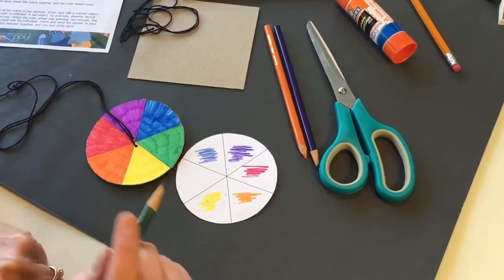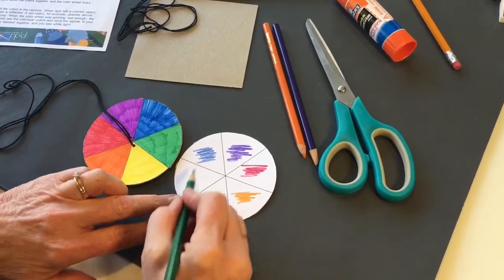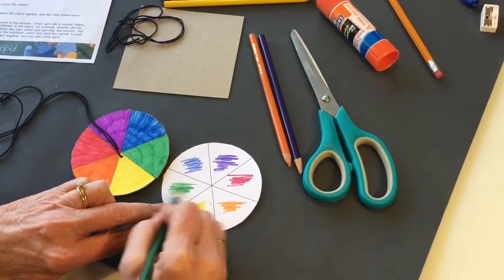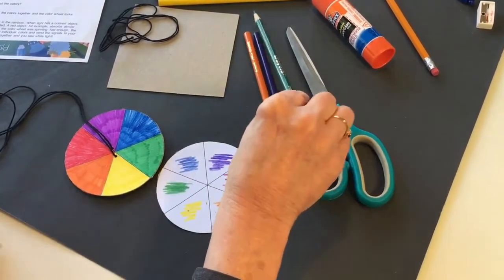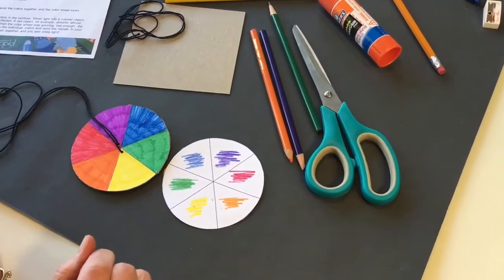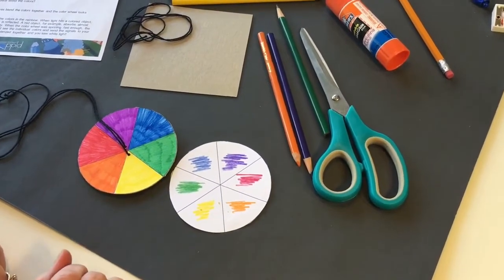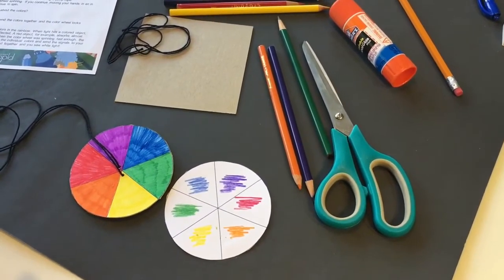And of course yellow and blue make green. Now I'm gonna finish coloring this in a bit but that is your basic color wheel and you've got primary colors and then the secondary colors of green, orange and purple.